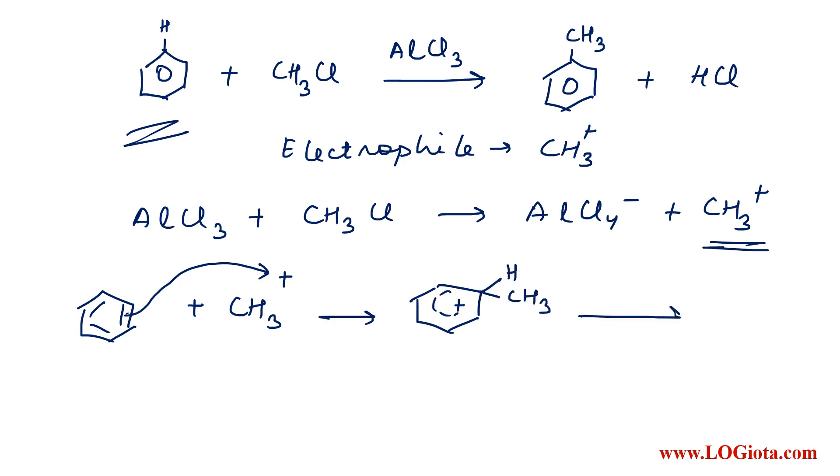The next step: this carbocation is very unstable. So AlCl4⁻ will extract H⁺ from here and lead to the formation of toluene with HCl and AlCl3. In the final reaction, we're getting AlCl3 back. That's why we say it acts as a catalyst in this reaction.